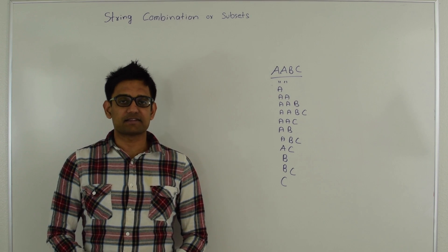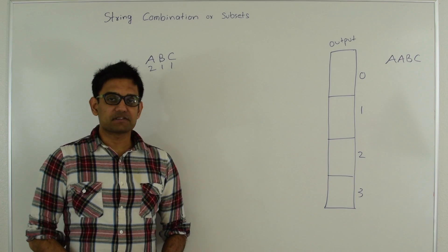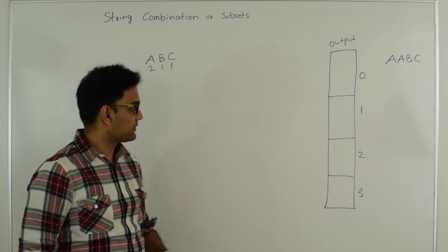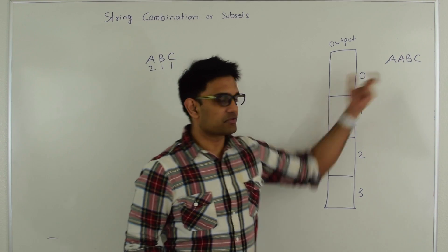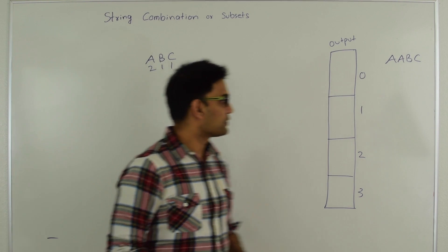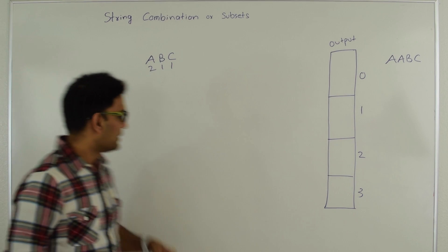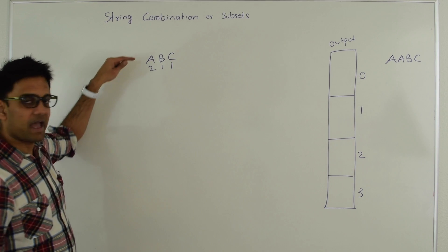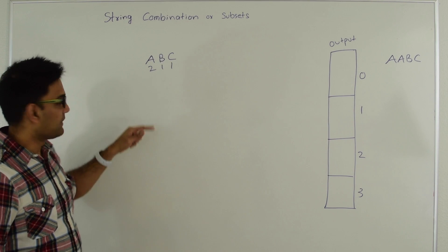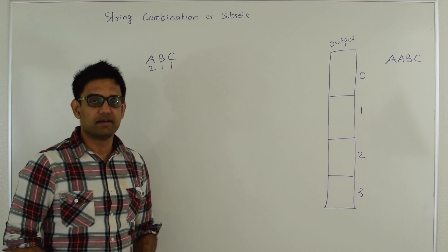The first thing we're going to do is take all unique characters in our input string and their count. So for the string AABC we have three unique characters A, B, C and their counts are 2, 1, and 1.